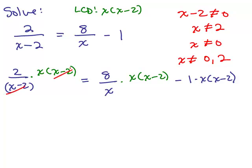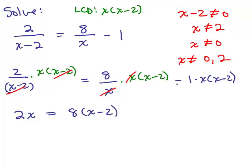Let's see if anything cancels, because that's the whole idea of multiplying by the least common denominator when you have an equation. The x minus 2's cancel, so on the left side we just get 2x. Now we have 8 over x times x times x minus 2 — the x's cancel — so we get 8 times x minus 2. And here we've got minus 1 times x times x minus 2, which I'll write as minus x times x minus 2. Be careful of your minus sign there.